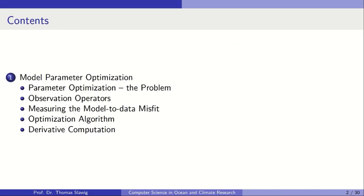First I will describe the parameter optimization problem. Then I will talk about observation operators, because the task in parameter optimization is to compare the model output to measurement data — to observations. The next point is how we measure the model-to-data misfit that we want to minimize. Since parameter optimization is an optimization problem, we need an introduction to how an optimization algorithm works, including the derivative or gradient of the cost function, and how that derivative can be computed or approximated.